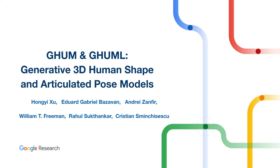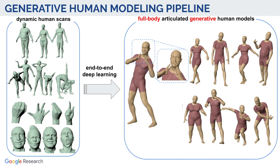We present our generative human models GAM and GAMLight. Given high-resolution 3D human scans collected from multiple subjects in diverse poses, and given additional close-up captures of their head and hands, we construct full-body generative 3D articulate human models within an end-to-end deep learning framework.